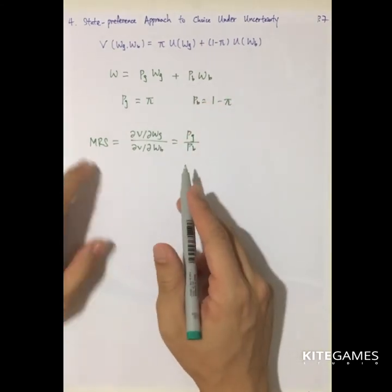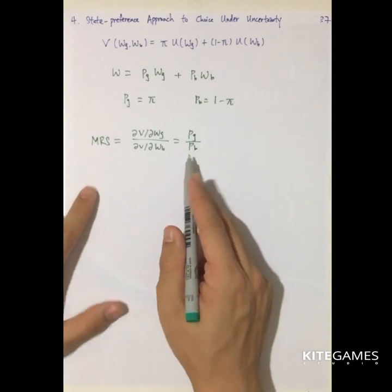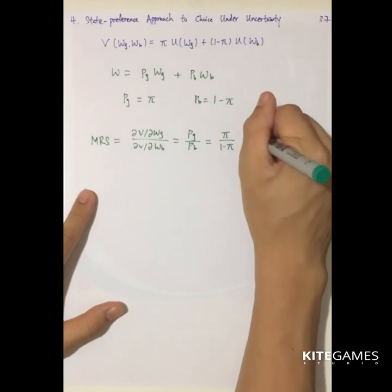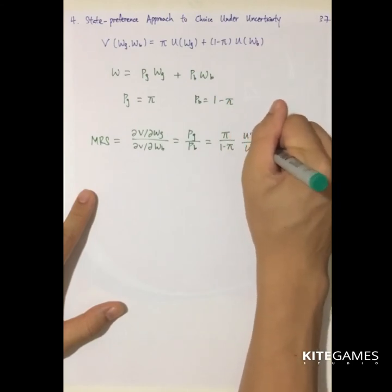So this is the equilibrium condition. The MRS is equal to the price. And the MRS is equal to pi over one minus pi U prime WG over U prime WB.